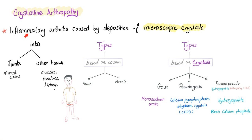Crystalline arthropathy is inflammatory arthritis caused by deposition of microscopic crystals into joints and other tissues. It can be acute or chronic. The crystal types are: gout uses monosodium urate; pseudogout uses calcium pyrophosphate dihydrate deposition; and pseudo-pseudogout uses hydroxyapatite crystals — specifically basic calcium phosphate. We call this hydroxyapatite arthropathy. Please remember: calcium phosphate.